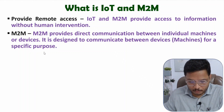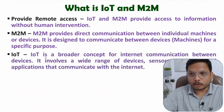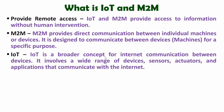Let me define IoT here. IoT is a broader concept for internet communication between devices. M2M is not a broader concept — limited devices will communicate with each other. But in IoT, we have a broader concept involving a wide range of devices, sensors, actuators, and applications that communicate using the internet. So in IoT, we have a broader network and use the internet for communication with multiple applications.